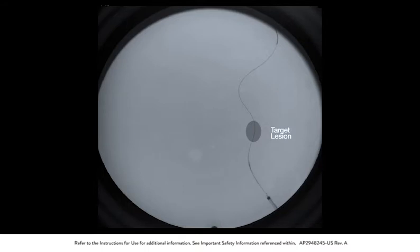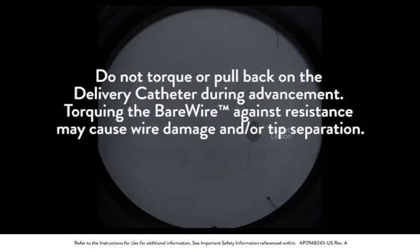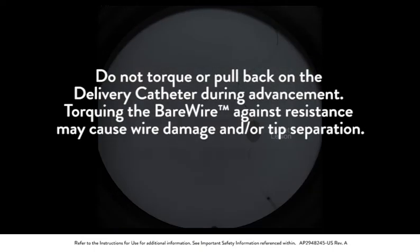Carefully advance the delivery catheter over the bare wire to the intended filtration element deployment site. Do not torque or pull back on the delivery catheter during advancement. Torquing the bare wire against resistance may cause wire damage and or tip separation.